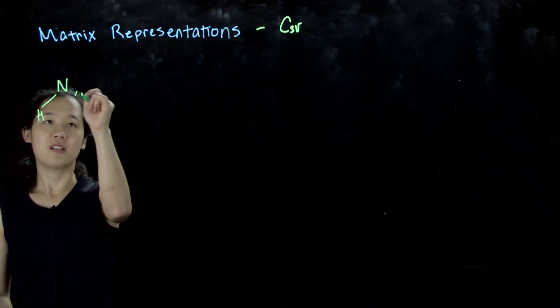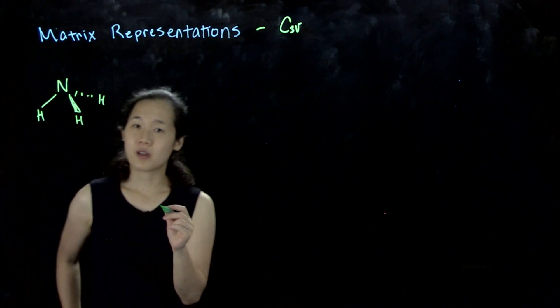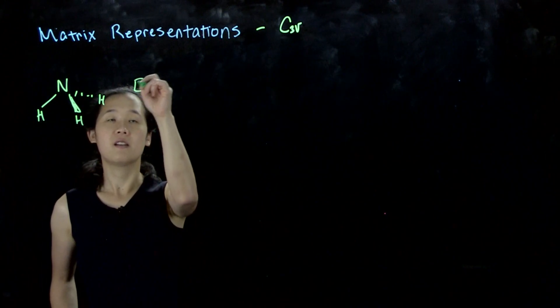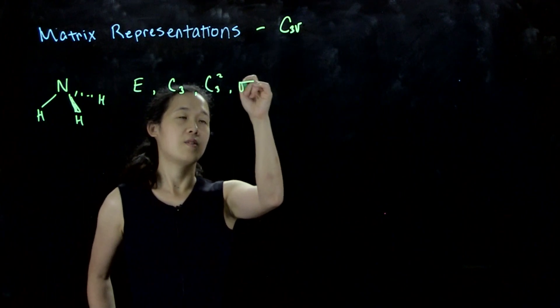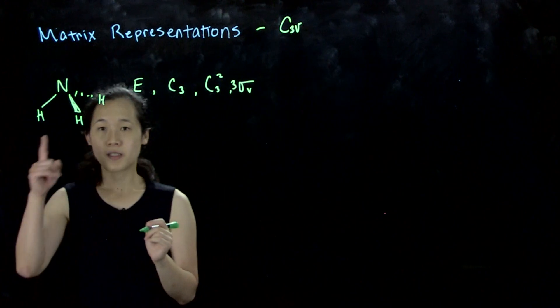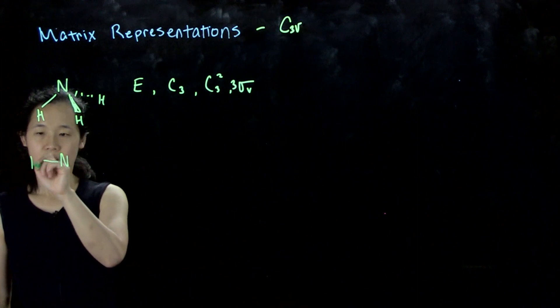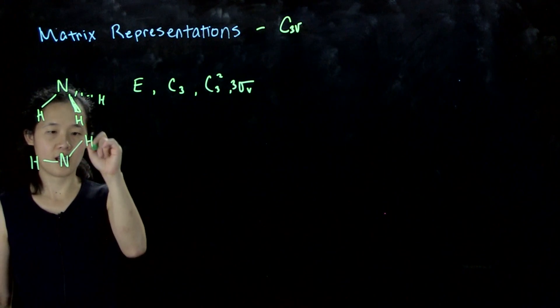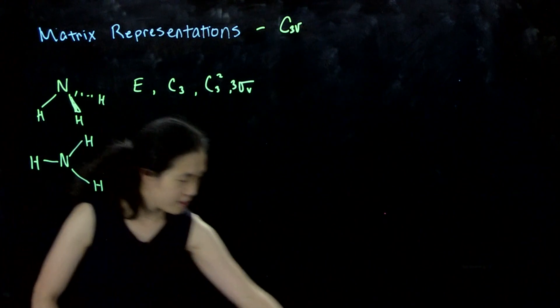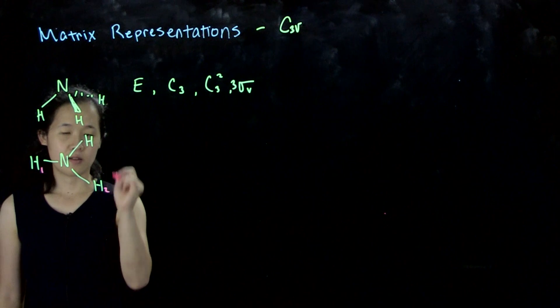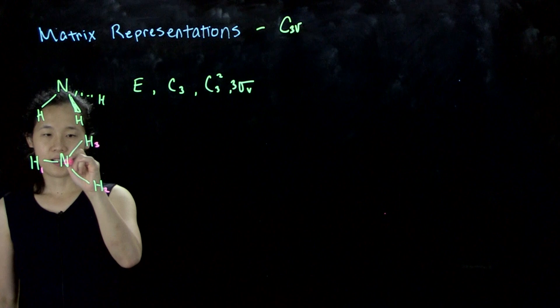Ammonia is C3v and we know the symmetry operations that it has are E, C3, C3 squared, and then we have three sigma v's. So I'll define it here in the same way that we did in class. Let's have H1, H2, H3, and the C3 axis is down the middle.